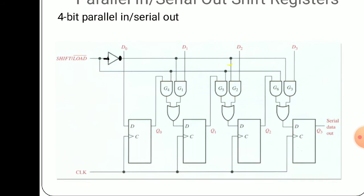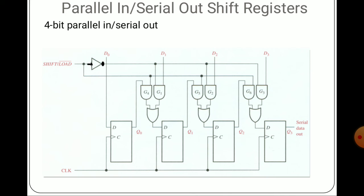For loading operation, G1, G2, G3 AND gates are active and G4, G5, G6 are off state. After loading is over, loading gates are disabled and we activate the shifting mode — the shifting gates are G4, G5, G6. The output of the first flip flop is given as input to the second flip flop, and the output of the second flip flop is given as input to the third flip flop, in serial fashion. That is why it is parallel in serial out mode — we are loading the data parallelly and getting the output as serial.